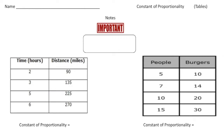Just a reminder: anytime you hear the term constant of proportionality, we're talking about unit rate. Please read that inside this little box — we're talking about unit rate. Anytime you hear me say constant of proportionality, we're talking about unit rate.